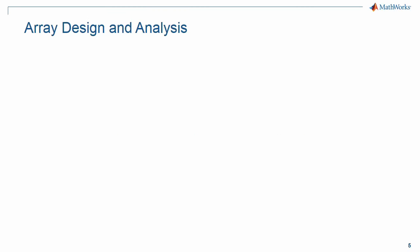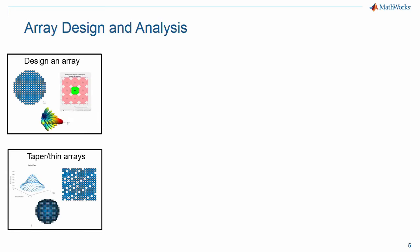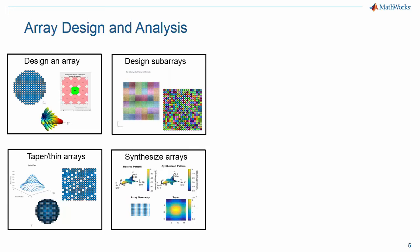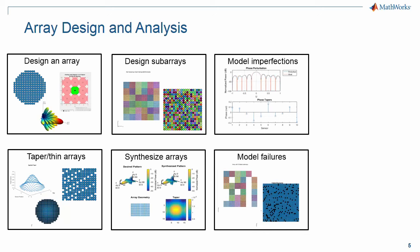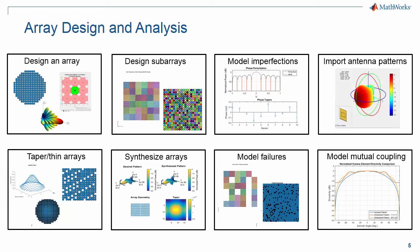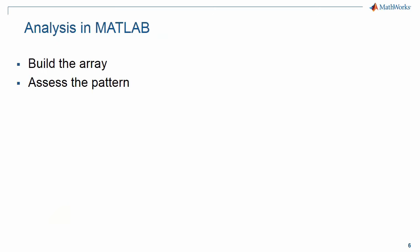We'll start with looking at array design and analysis. We can design an array, we can apply tapers and do thinning algorithms on the array. We can build up subarrays and have overlapped arrays as well. We can synthesize arrays from a known pattern. We can model imperfections to help with things like developing calibration frameworks. We can also look at life cycle analysis by modeling failures of subarrays and individual elements in the array. And finally, we can increase the fidelity of the model by importing actually measured data for the antenna patterns or perhaps a design that includes the effects of mutual coupling. We can analyze the design and build the array up in MATLAB and assess the pattern that results with the array.